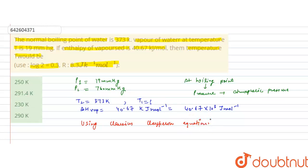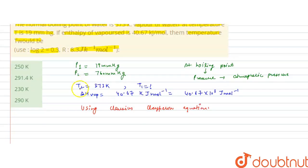This equation is log P2 by P1 equals delta H vaporization upon 2.303 R into T2 minus T1 upon T1 into T2. So using this equation, we can calculate the value of T1.